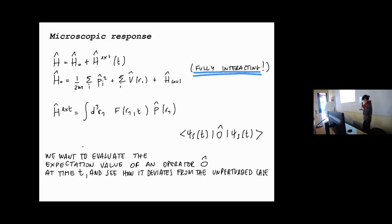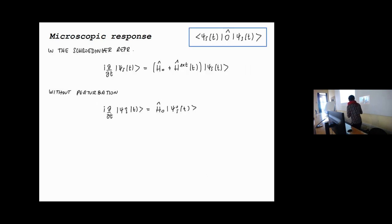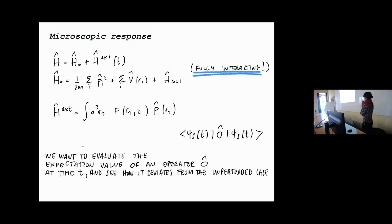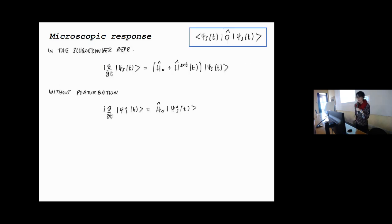Similarly to what Gianluca showed you, we are interested in evaluating the expectation value of an observable O on the system at time t and seeing how it deviates from the unperturbed case, that is, from the case in which the external perturbation is not applied. Here I just write the Schrödinger equation.